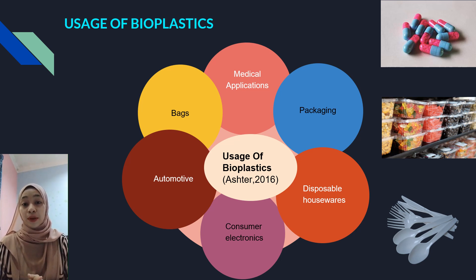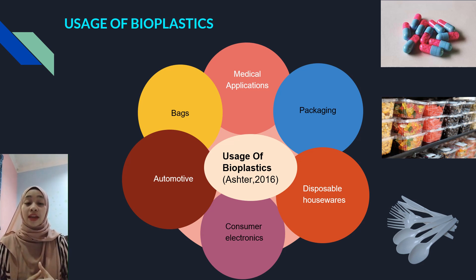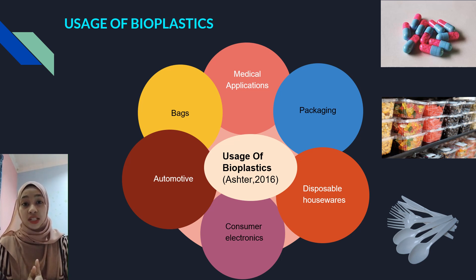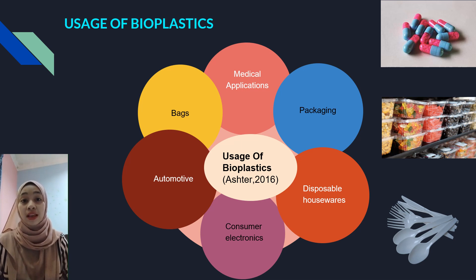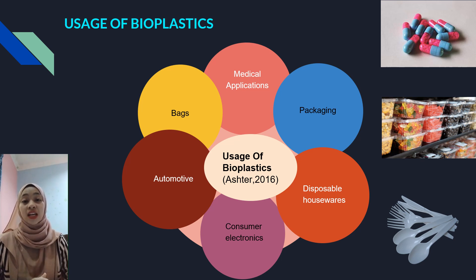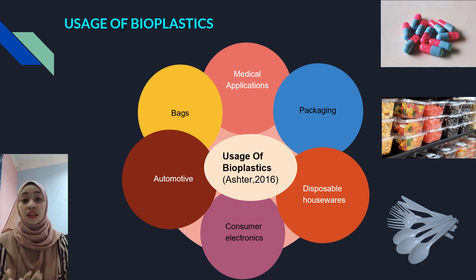The second usage of bioplastics is bags. Biodegradable shopping bags are made of polymers that degrade or decompose when exposed to air, water, or sunlight. There are three types of biodegradable bags: original biodegradable bags, PLA, and OZO biodegradable. Next is disposable houseware, where disposable houseware made from biodegradable plastic is now seen as a marketable option that replaces traditional plastics such as polystyrene and polyolefin. Items such as kitchen towels, washable storage, cups, bathroom accessories, and toys are now being produced using biodegradable plastic.